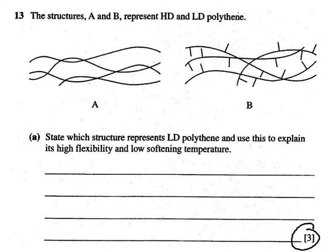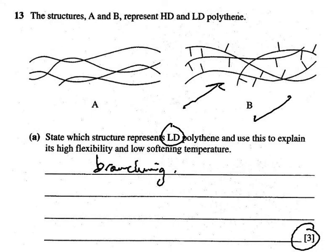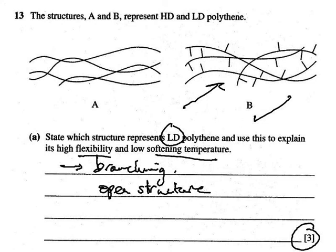Do pause and have a go. What do you need for 3 marks here? First of all, which one represents low density polythene? The answer is B for a mark, and a second mark for indicating that it has branching, whereas high density does not. Then we've got to explain this flexibility and softening based on the branching, because branching produces a more open structure with weaker van der Waals forces between the molecules, giving it greater flexibility and a lower softening temperature. So: a mark for B, a mark for branching, and a mark for saying branching results in a more open structure with weaker bonds between the molecules.